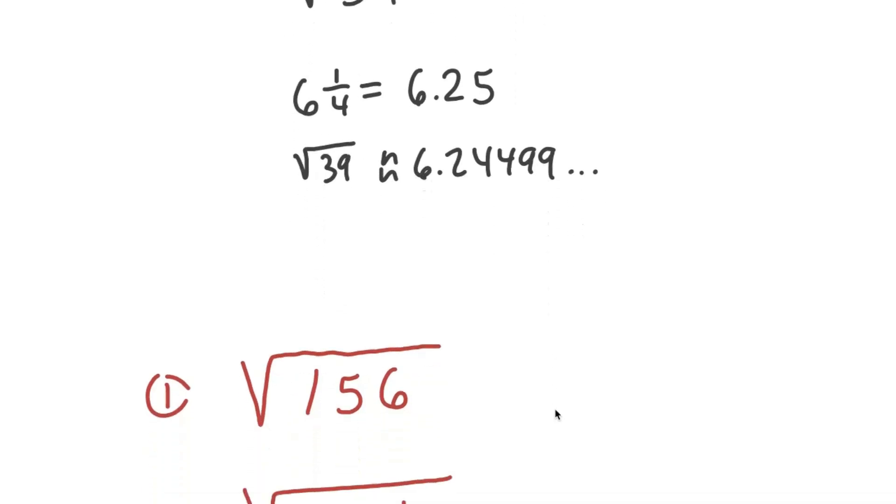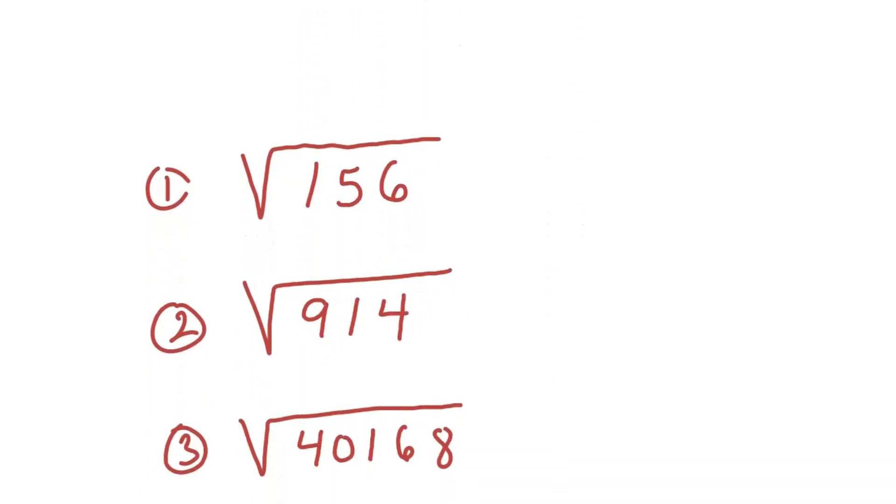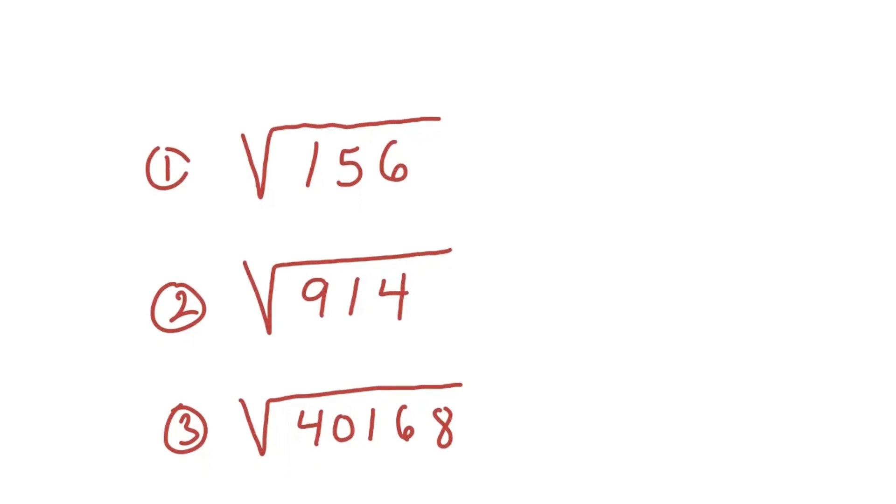Now let's practice. So I have three square root values here. Square root 156, square root 914, and square root 40,168. Using the method you just learned, try and solve these problems. I'll reveal the solutions in a sec.